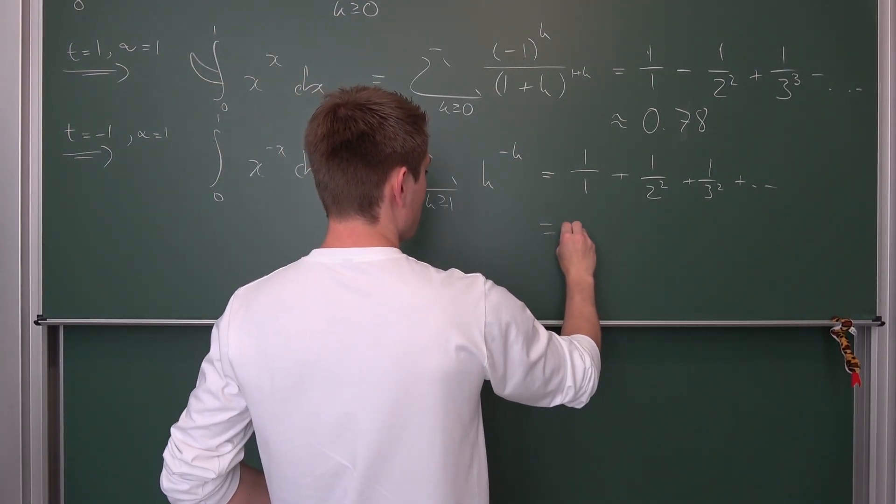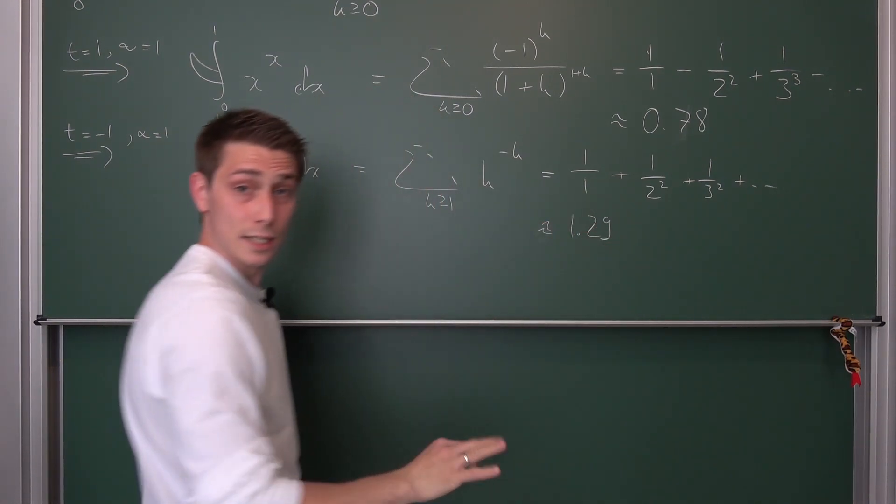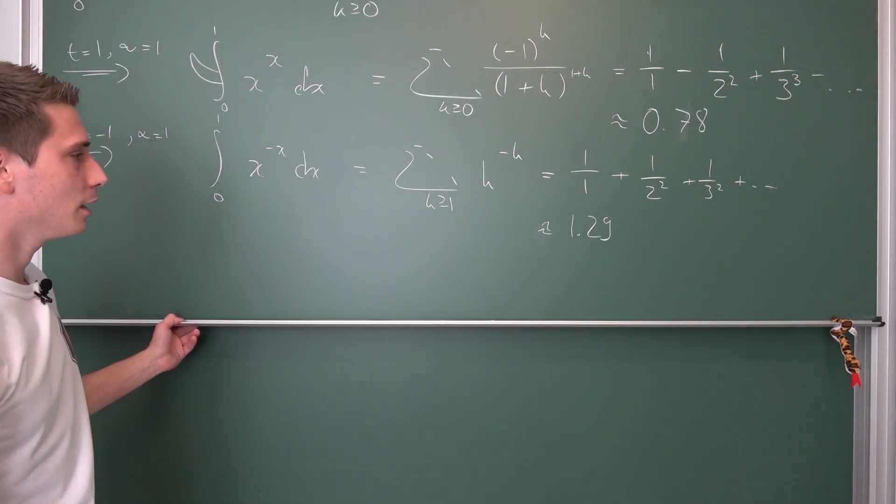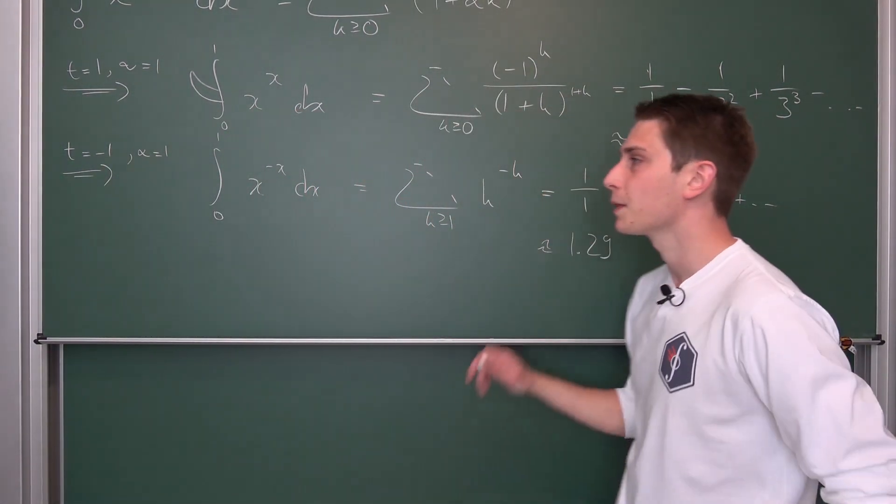It also converges kind of fast to the real result if you truncate it kind of early, but you have to take a few more of those members into account. So you can cut it off at the third one. It's going to be kind of far away still, like a few decimal places. But take a few more of those and then you are going to be pretty close. The result of this thing should be something like 1.29, something of that sort.